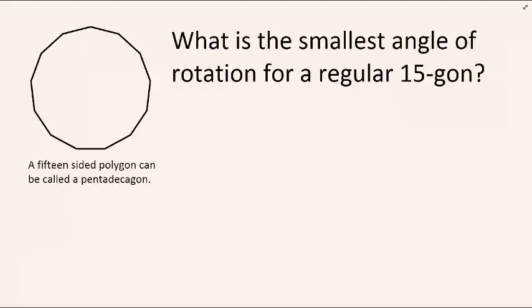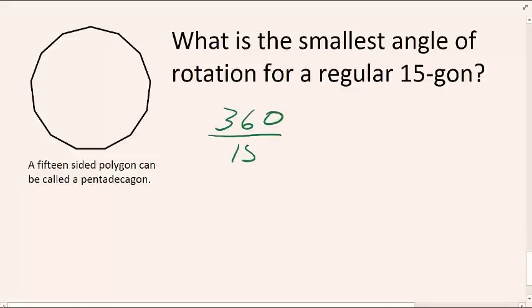Let's try this one. What is the smallest angle of rotation for a regular 15-gon? Well, we can take 360, divide it by 15 because a 15-gon has 15 sides, and we get 24 degrees.